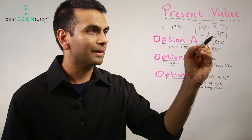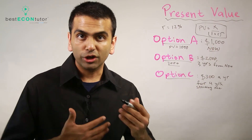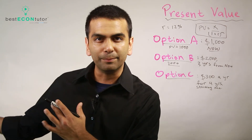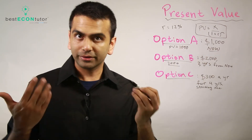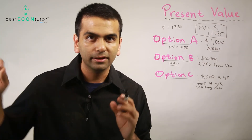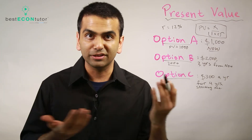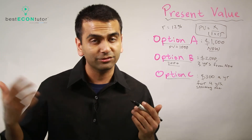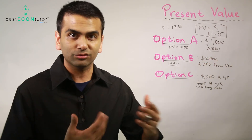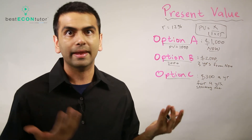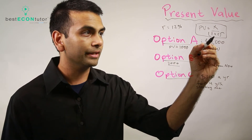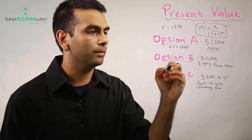If N is zero — money given to you right now — then (1 + R) to the zero is just 1, so the present value is simply X. For option A, $1,000 given right now, the present value is just $1,000. Now we want to compare the present value of the other options to this $1,000 baseline.